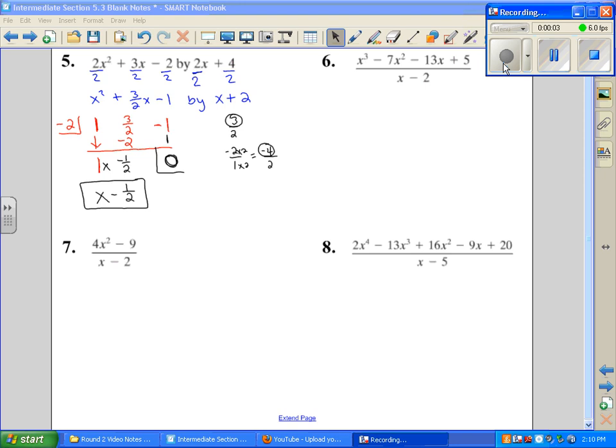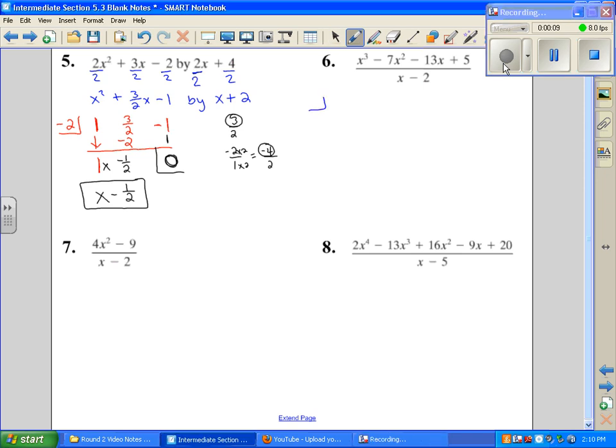Alright, number six. It's just in a different form, but it's the same thing on division. We're going to start with our box and do opposite of this, so we get positive two. We're going to check and make sure this is in order: x to the third, x squared, x to the first, constant.